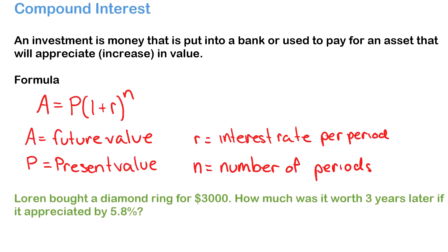In this video we're looking at compound interest. An investment is money that's put into a bank or used to pay for some sort of asset that will appreciate or increase in value. Compound interest builds over time — if it's monthly, each month you generate a new amount which gets added to your investment.